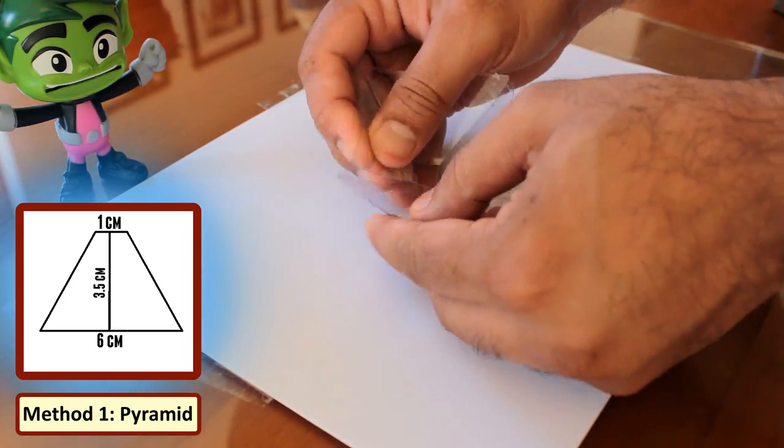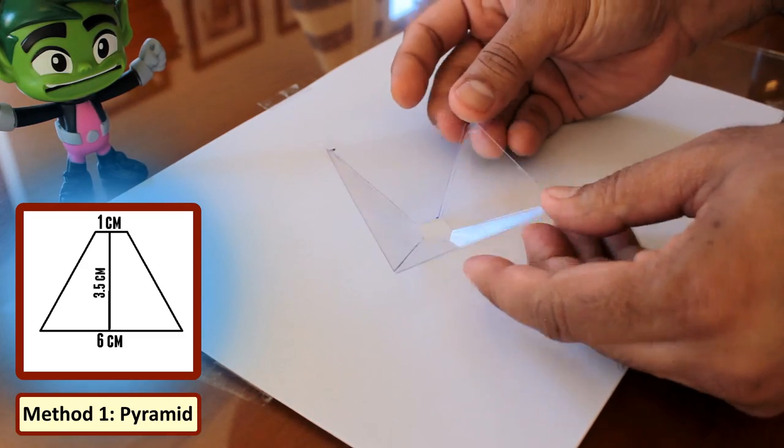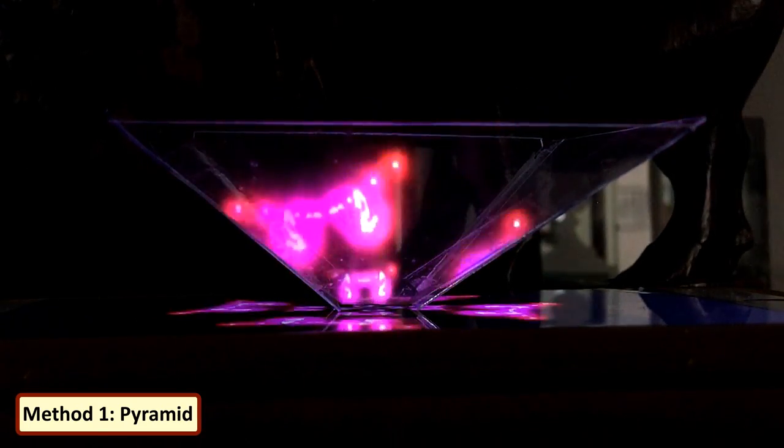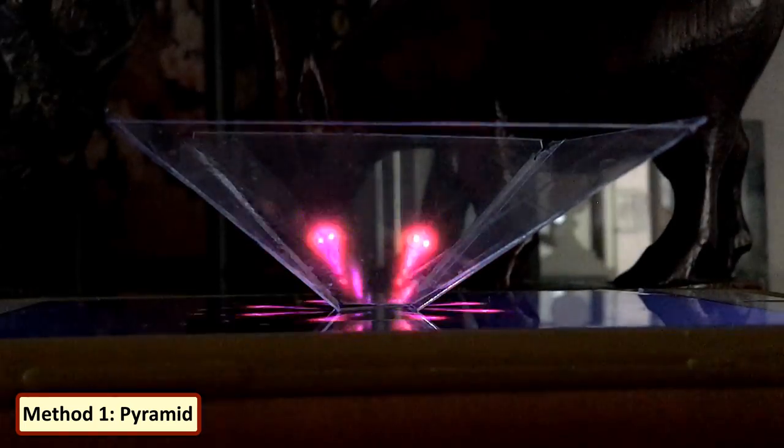You just place the pyramid on top of your tablet or the smartphone screen while playing a hologram video and a 3D object floats and moves inside the pyramid. The device creates a 3D like illusion for viewers and make an image or video appear as if it's in the media.